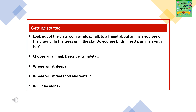Getting started. Look out of the classroom window. Talk to a friend about animals you see on the ground, in the trees, or in the sky. Do you see birds, insects, or animals with fur? Choose an animal. Describe its habitat. Where will it sleep? Where will it find food and water? Will it be alone?